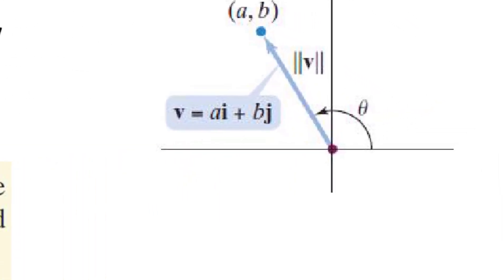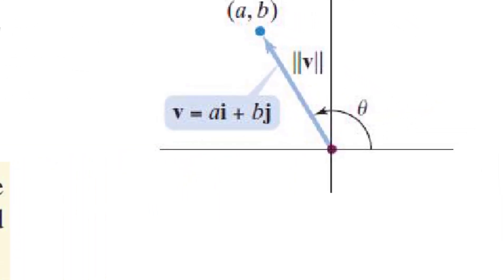In this video, we're going to talk about writing a vector in terms of its magnitude and direction. Up to this point, we've talked about the fact that if we have a position vector with its initial point at the origin that ends at a pair of coordinates a, b, then we can write the vector as a i plus b j, where i and j are the unit vectors in the horizontal and vertical directions.